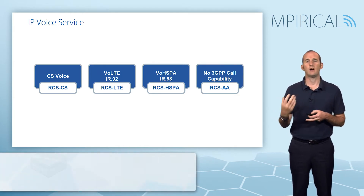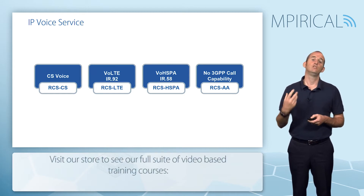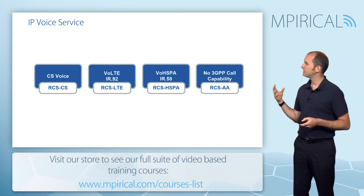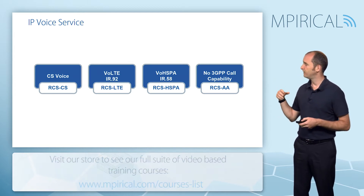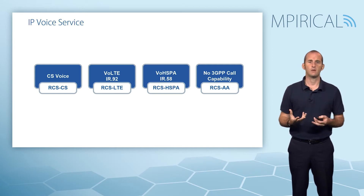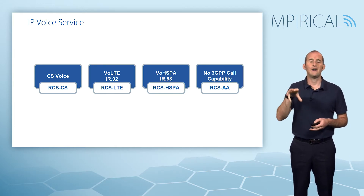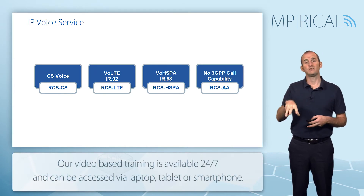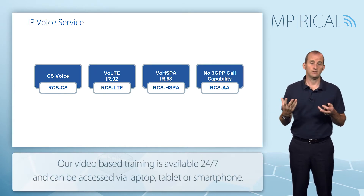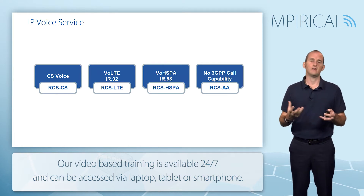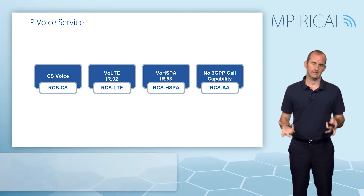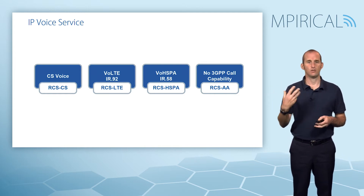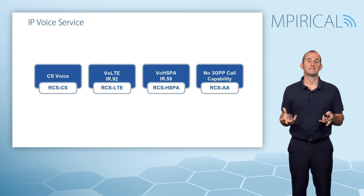A typical example of access agnostic would be using a Wi-Fi network to access the voice service. In the case of LTE, HSPA, and no 3GPP call capability, all of those procedures would be IMS-based — largely based on IR92 VoLTE, though obviously in some cases the access network won't be LTE. Circuit switch voice is based on regular 2G or 3G circuit switch call establishment.